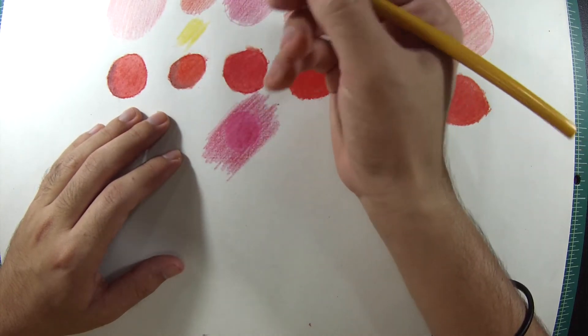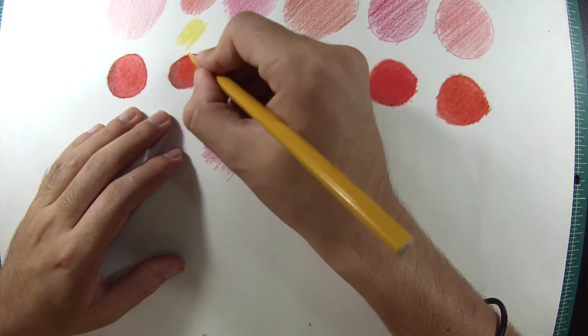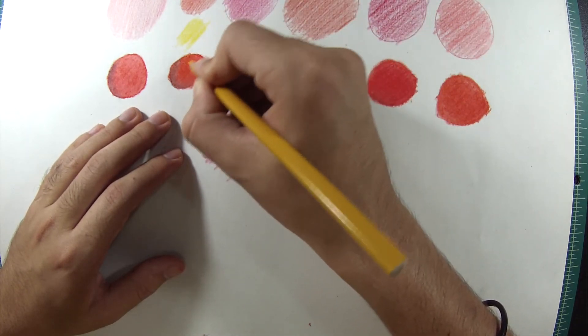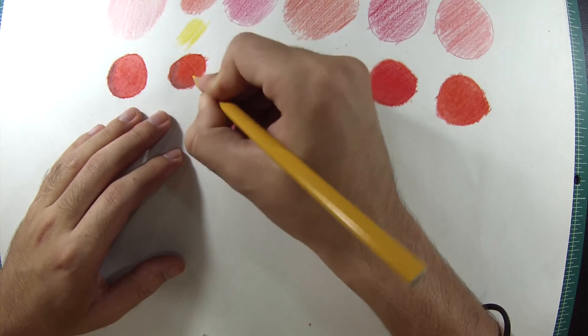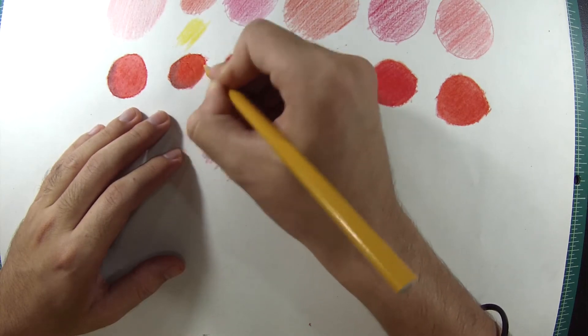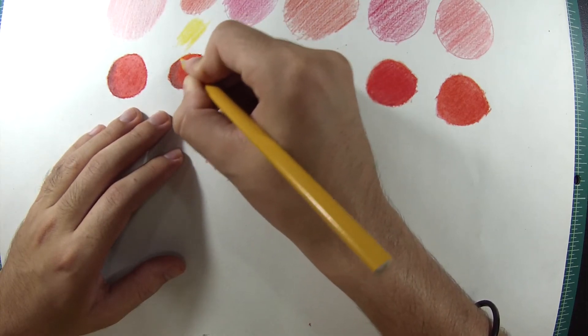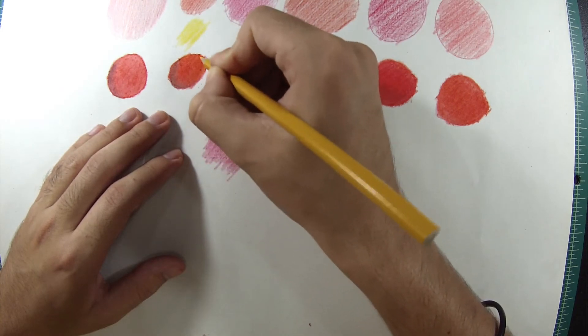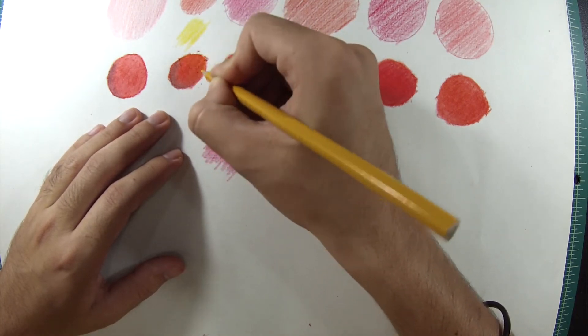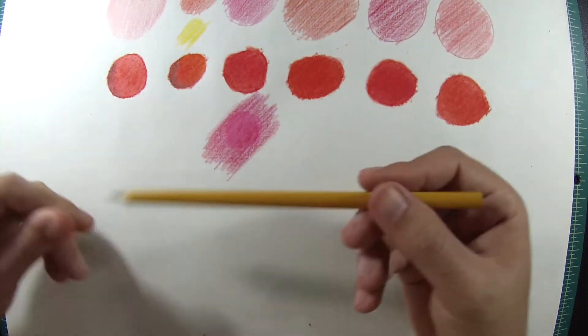And I'm gonna blend it in the red circle. You may not see a real huge difference, maybe because it's in the video, but believe me, you'll see it. That's blending the yellow and the red.